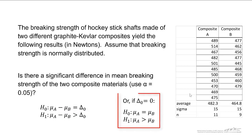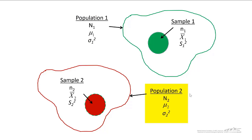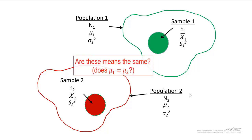If delta-naught is equal to zero, which again happens 99% of the time, then we can simply set up the following hypothesis: we're trying to show that the mean of A is greater than the mean of B. So for comparing two populations, we have population parameters N1, mu1, and sigma1 squared, and population 2 with parameters N2, mu2, and sigma2 squared. We take two samples — a green sample and a red sample. They may or may not have different sizes and may or may not have similar variances. What we're trying to determine is: are these means the same? Does mu1 equal mu2?